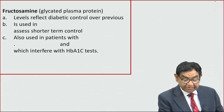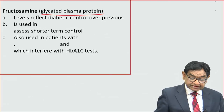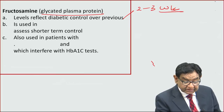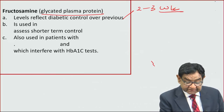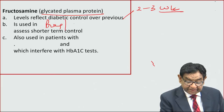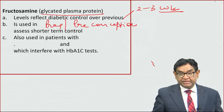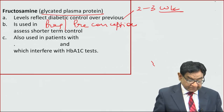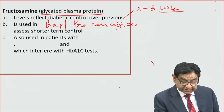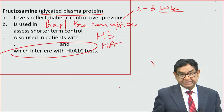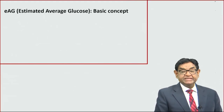Fructosamine is glycated plasma protein — mainly albumin — that can tell you the sugar value for the last two to three weeks. It is specially used in pregnancy and preconception status, because in pregnancy we want an immediate short-term assessment rather than a long-term one. It is also used in hemoglobinopathies and hemolytic anemias, where these conditions may interfere with HbA1c assessment.